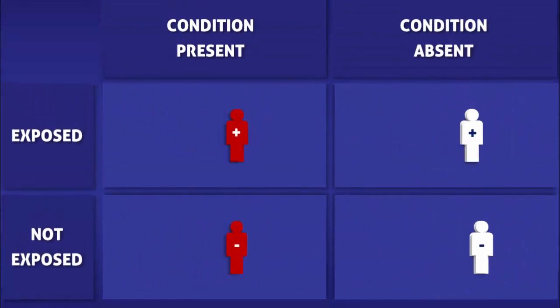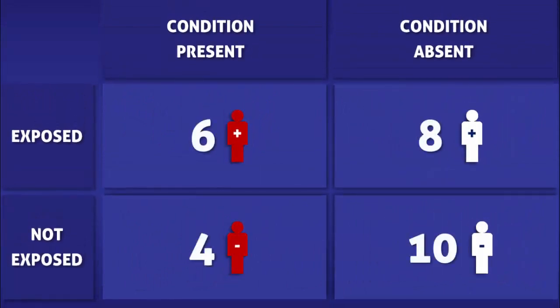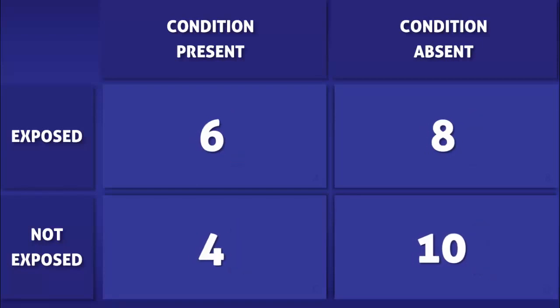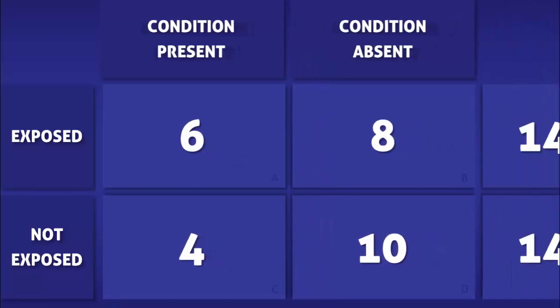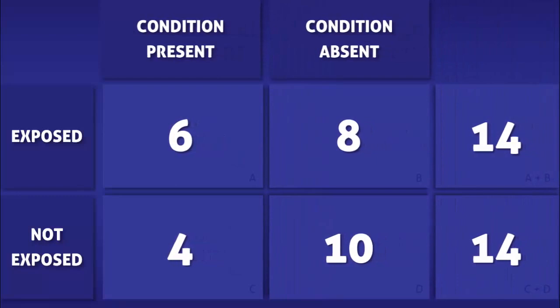Counting the character icons, we find that 6 people who were exposed to the risk factor developed the condition, whereas 8 people who were exposed did not. Out of those who were not exposed, 4 people developed the condition and 10 didn't. In total, 14 people were exposed and 14 people weren't.